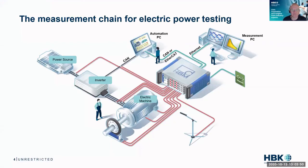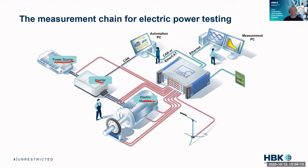This is a little bit simplified drawing of an electric drivetrain. It shows the main components: a power source, an inverter, an electric machine, a power analyzer, an automation system, and a lot of cables in between.